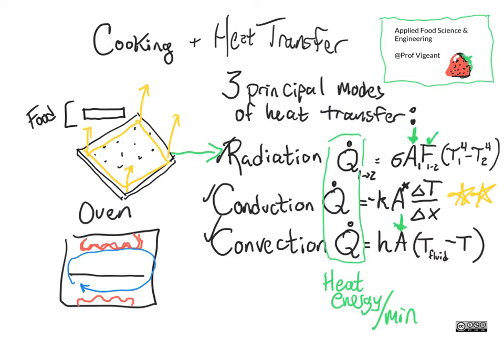The F in the radiation equation tells us about how much of the food in the oven can 'see' that heating element. If you're cooking one cookie sheet of crackers, F is all the way up to one because it's completely exposed to the heating element. But if you're using two or three or four trays and they are blocking each other, it might be one for the top tray and much smaller for the subsequent ones.